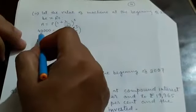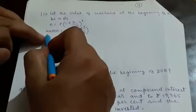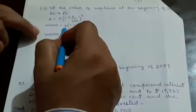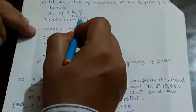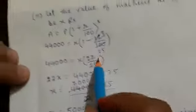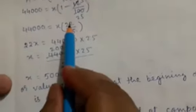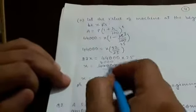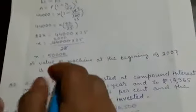We write A = P into (1 minus r by 100) to the power 1. Amount is 44,000 and principal is x rupees. So 44,000 = x into (1 minus 12/100) = x into 22/25. By cross multiplication, 22x = 44,000 into 25. So x = 44,000 into 25 by 22. Simplifying, x = 2,000 into 25 = 50,000 rupees. So the value of the machine in 2007 was 50,000 rupees.